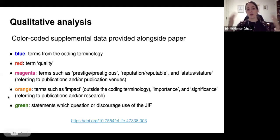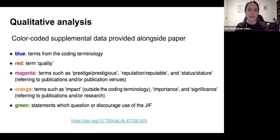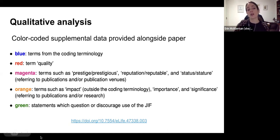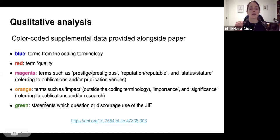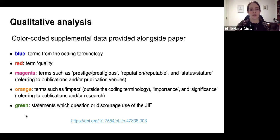We also provided a supplemental document — we couldn't share the RPT documents themselves because the copyright belongs to the institutions. But we pulled out text from those and put a document alongside the paper that showed each of the dimensions, color-coded: terms in our coding terminology were blue, quality associations were red, magenta was prestige/reputation/status, orange was impact/importance/significance, and green was used to flag statements that were questioning or discouraging the use of journal impact factor. This was a very visual way to provide the data so folks could see at a glance how often certain terms were being used and how often this metric was being associated with certain concepts.